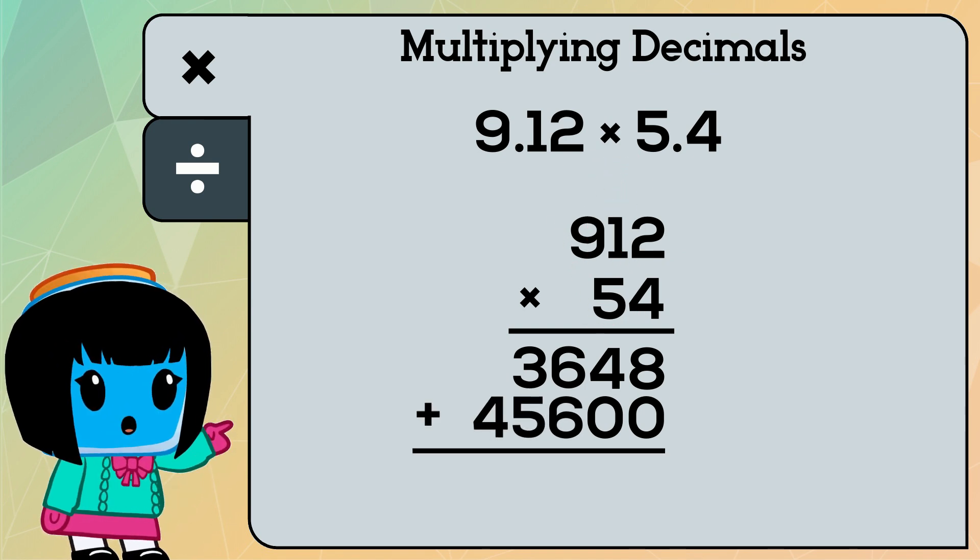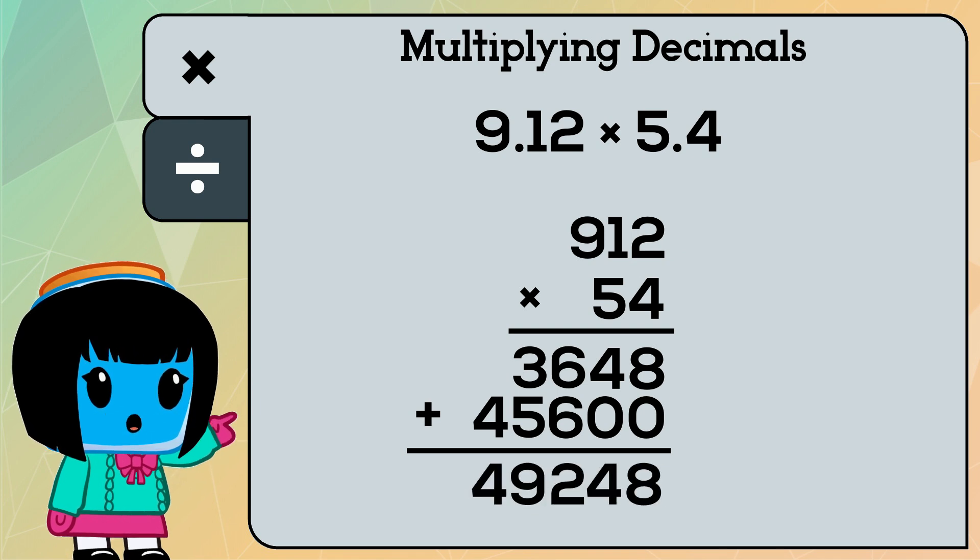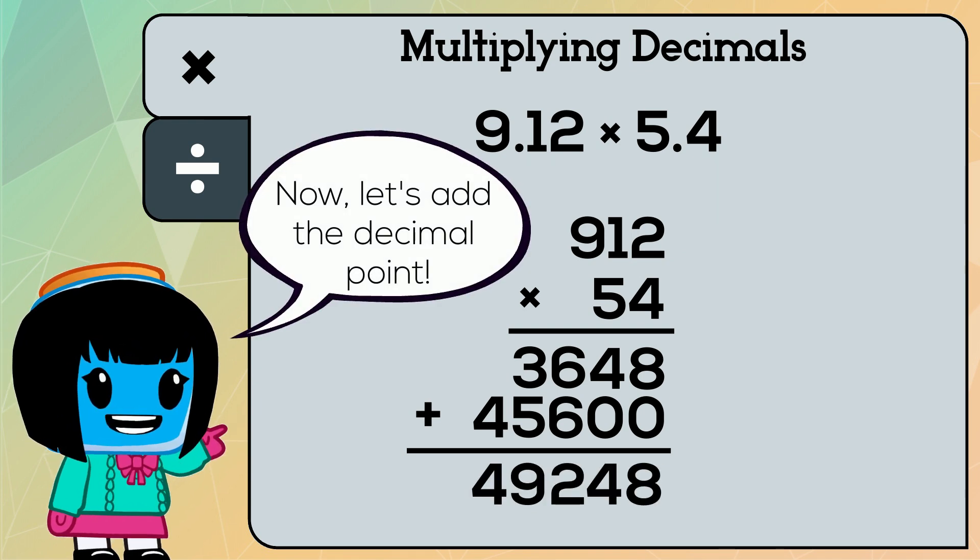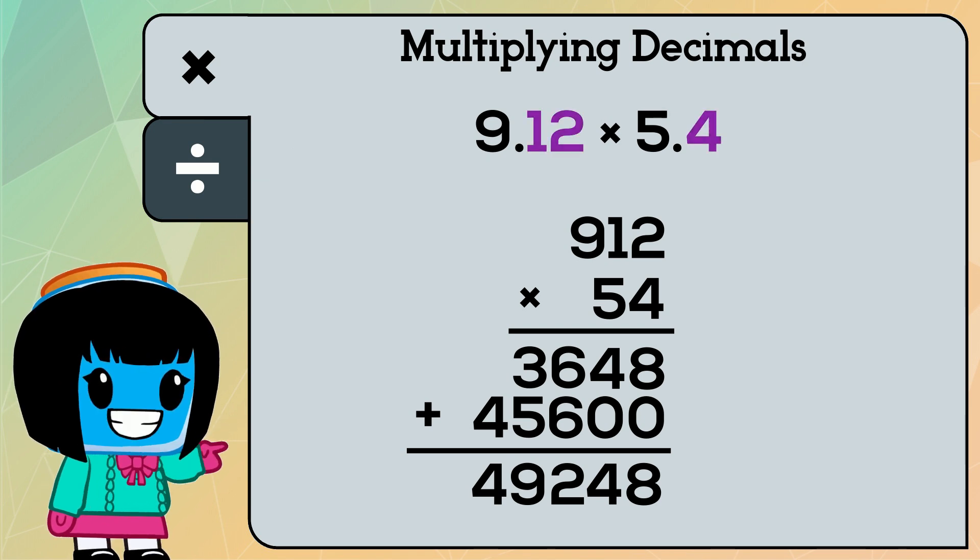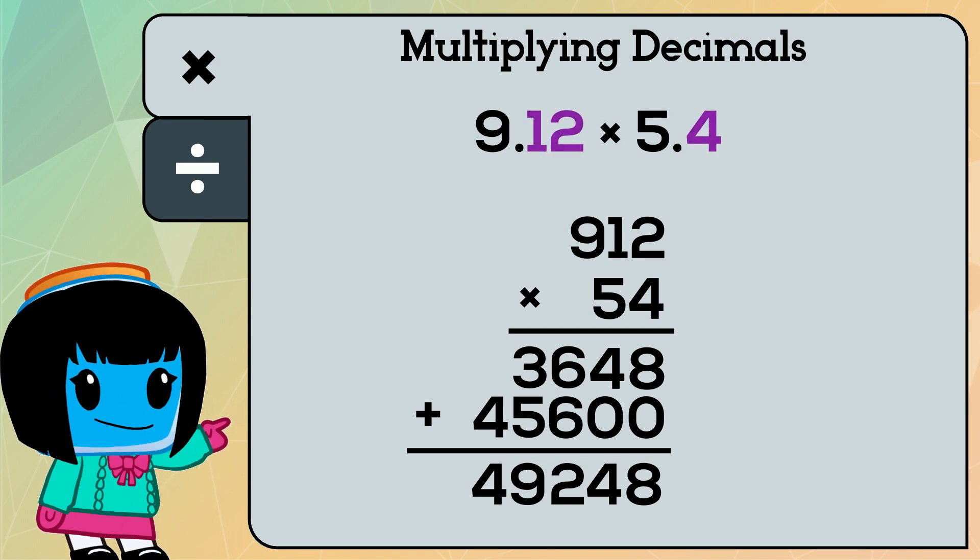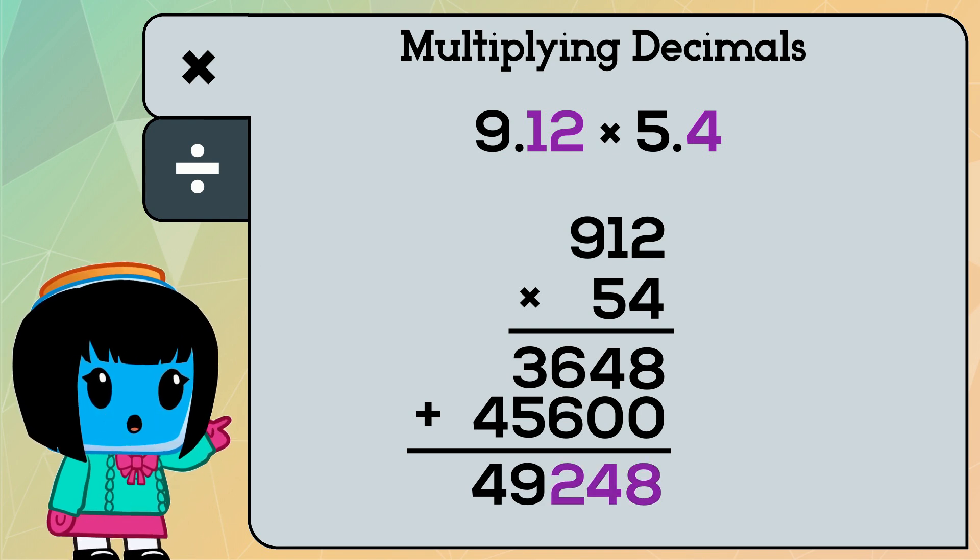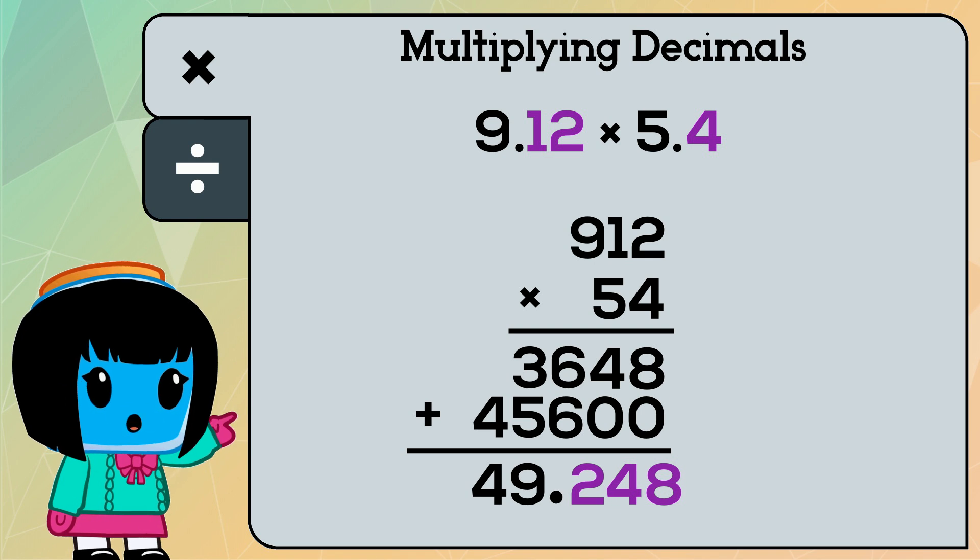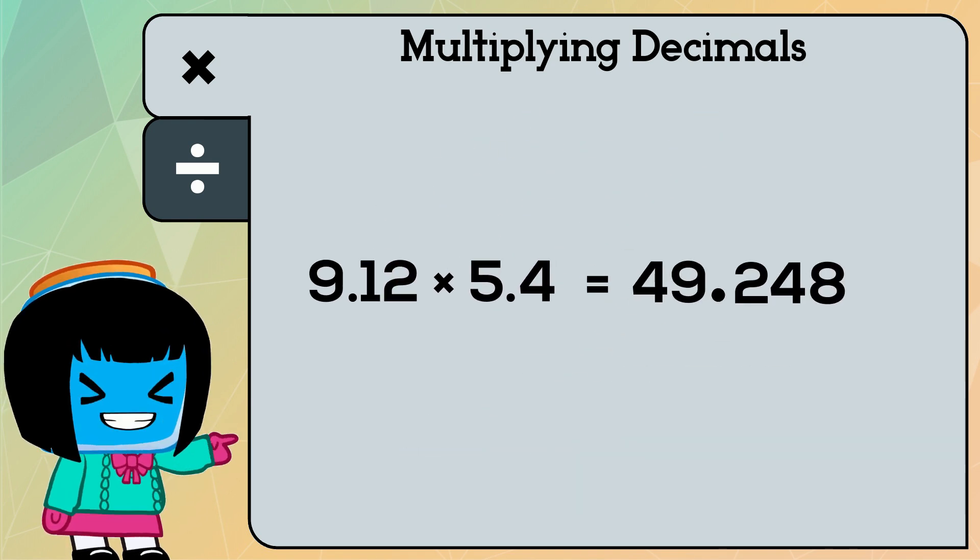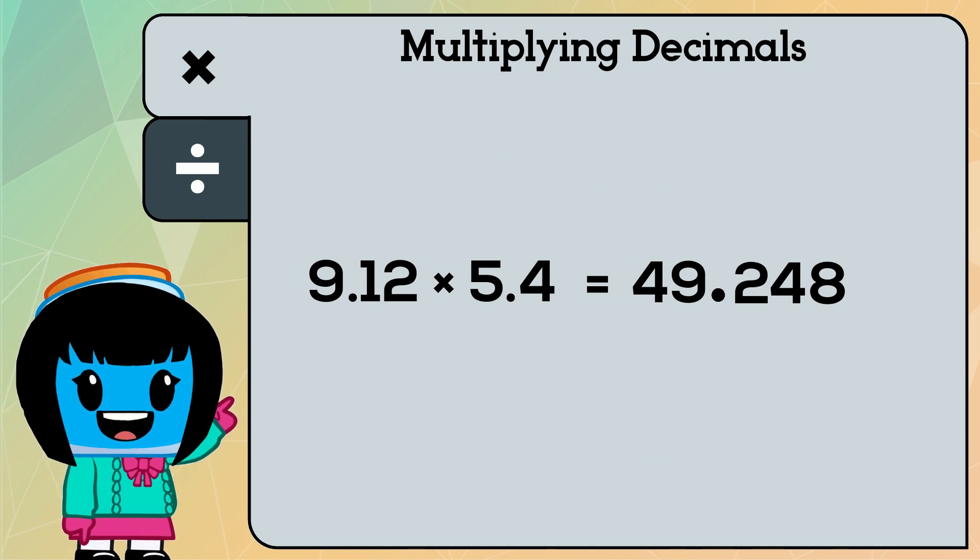After multiplying, we'll add both rows. Now it's time to add our decimal point. Since we've had a total of three decimal places in our factors, we must have three decimal places in our product. That means we have a decimal point between the 9 and the 2, making our product 49 and 248 thousandths.